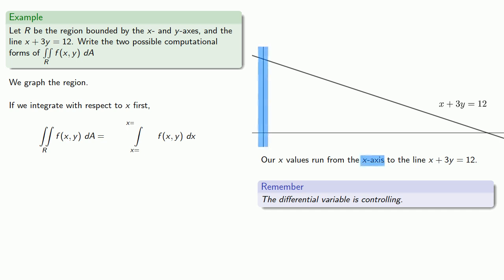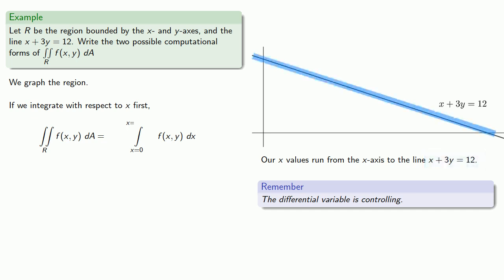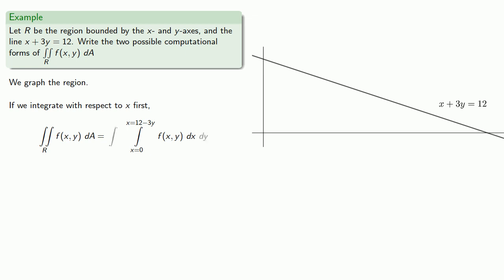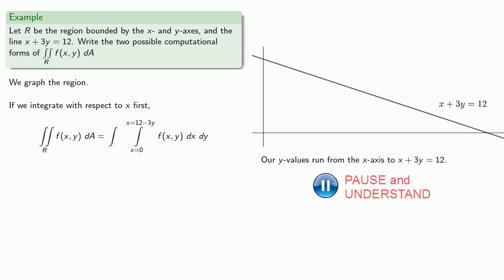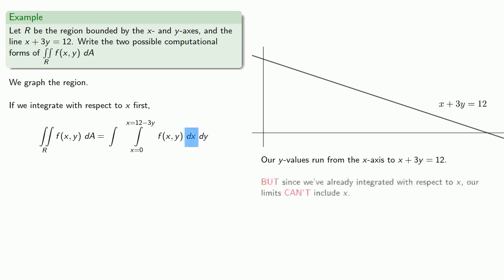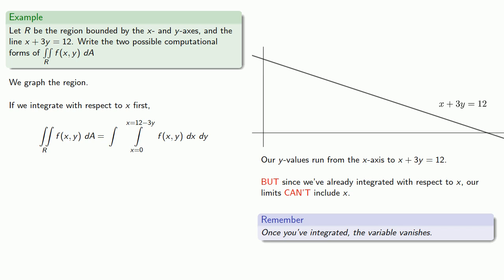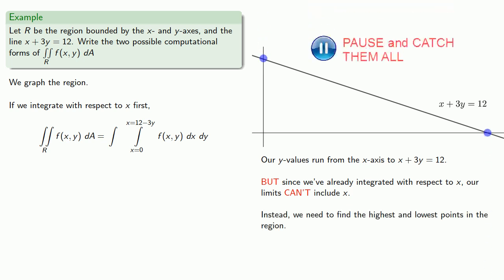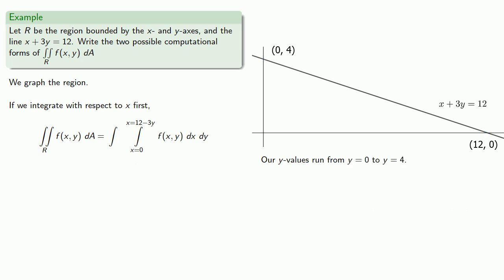Since we're starting at the y-axis, our lower bound is going to be x equals 0. Since we're going to the line x plus 3y equals 12, we'll rewrite that so it's x equals something, and that gives us our upper bound. We'll then integrate with respect to y, moving vertically. Our y values seem to run from the x-axis to the line x plus 3y equals 12, but since we've already integrated with respect to x, our limits can't include x — once you've integrated, the variable vanishes. Instead, we find the highest and lowest points in the region, so y varies from y equals 0 to y equals 4.